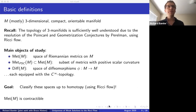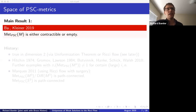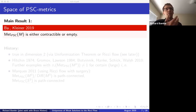Moving on to the space of positive scalar curvature metrics: that's an open subset, because perturbations of metrics with positive scalar curvature again have positive scalar curvature. The main result, due to Bruce Kleiner and myself from last year, states that the space of positive scalar curvature metrics on M for any compact three-manifold is either contractible or empty. Some manifolds don't admit such metrics, so the space is empty; but if such metrics exist, this space is contractible — simply connected with all higher homotopy groups vanishing.